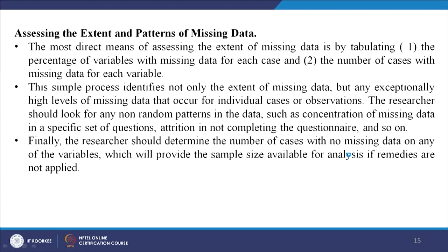To assess the extent and pattern of missing data, the most direct means is by tabulating - taking a frequency of the percentage of variables with missing data for each case. This simple process identifies not only the extent but any exceptionally high levels of missing data for individual cases. The researcher should look for any non-random patterns: if randomness is present it is okay, but if there is a non-random or systematic pattern then you need to be very careful.